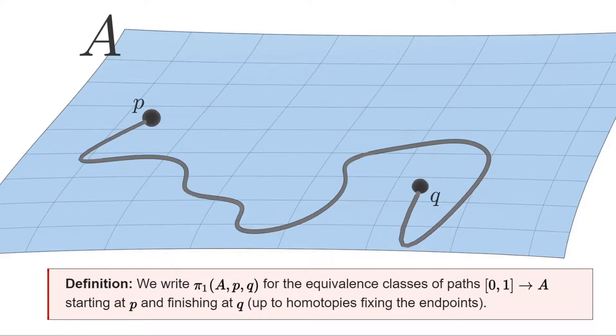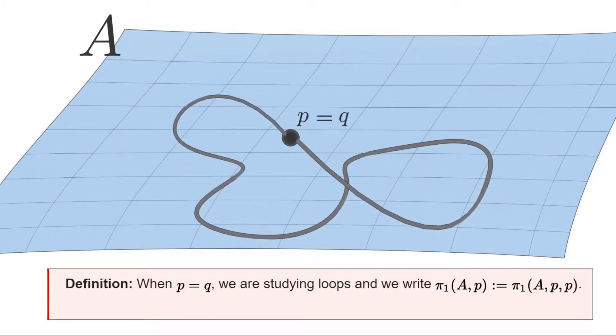There is a particular case that is of interest which is when P and Q are the same point, that is our paths must begin and finish at the same place. Then we are studying loops and we write π₁(A, P) for this object. This is called the fundamental group associated to A and P. We will see later that this is in fact a group as the name suggests, but for now we will just focus on its structure as a set.